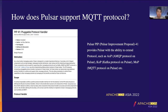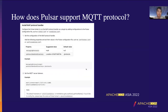For example, in MOP, we configure the message protocol as MQTT and specify the directory of the NAR package and specify the listening port for the protocol. Then, when the broker starts, it can automatically load the MQTT protocol handler. If you are interested in this part, please see PIP 421 for details.